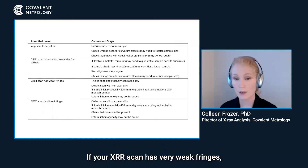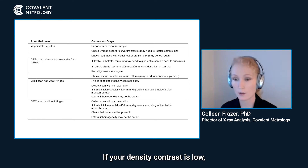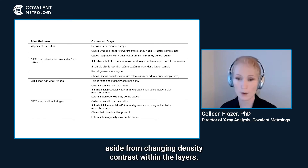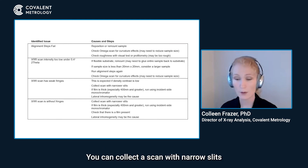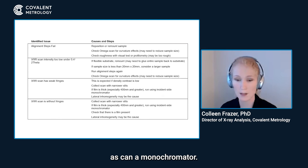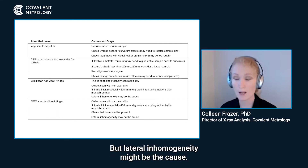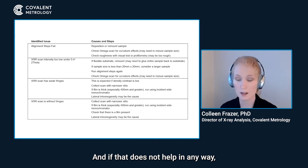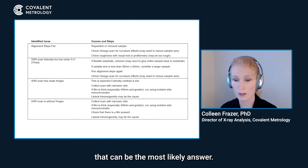If your XR scan has very weak fringes, this might be expected. If your density contrast is low, you might not be able to do anything about it aside from changing density contrast within the layers. You can collect a scan with narrow slits, which can help the resolution of your system, as can a monochrometer. Lateral inhomogeneity might also be the cause — try making a smaller beam, and if that does not help, that can be the most likely answer.